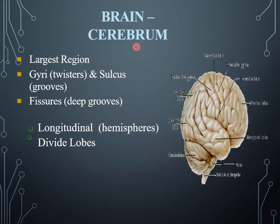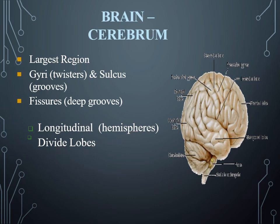The cerebrum is basically the largest region. It consists of twists and grooves known as gyri and sulci. Besides this, deep grooves are also present, known as fissures. These can be longitudinal, dividing the cerebrum into hemispheres and lobes.